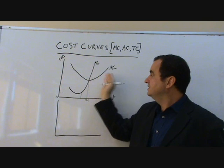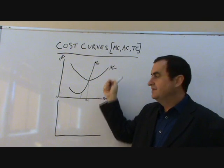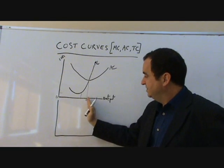When the marginal is higher than the average, it raises the average. It pulls the average up. And the defining point is Q here.